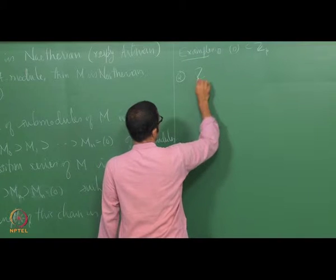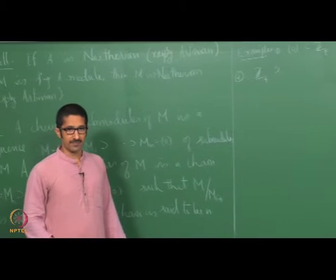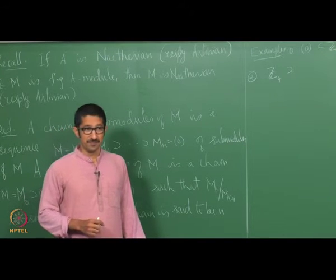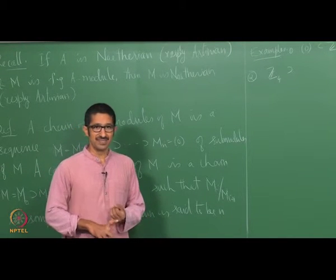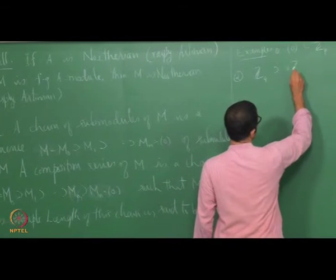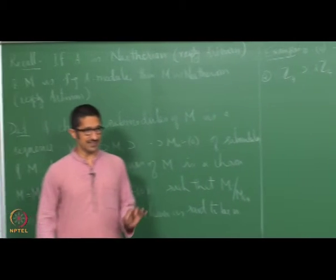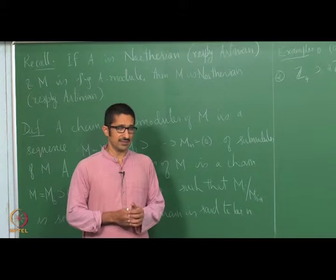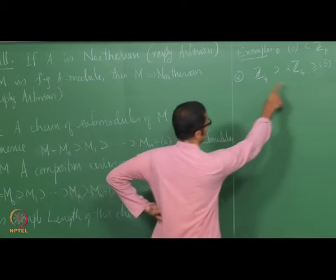Suppose I take Z_4. Can you give me a composition series for Z_4? The answer is Z_4, then the ideal generated by 2 (i.e., 2Z_4), then 0. Note: we should not say Z_2 contained in Z_4; rather, we use the ideal generated by 2. So this is a composition series of Z_4.